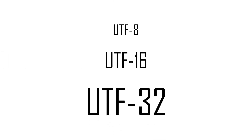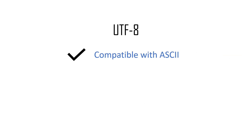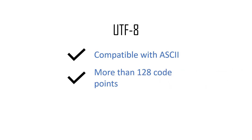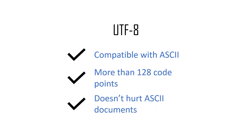Three different encoding schemes exist for Unicode: UTF-8, UTF-16, and UTF-32. Each uses a different number of bits as its base unit. UTF-8 is notable for its backwards compatibility with the ASCII character set, but also its ability to represent more than 128 code points, all without increasing the size of files encoded purely with ASCII.